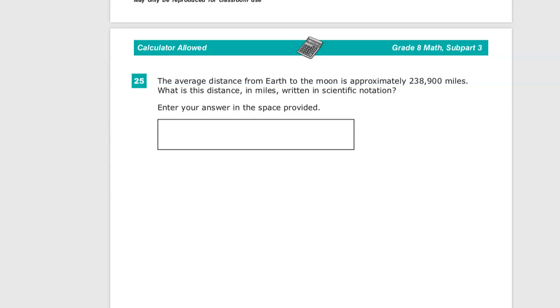This is the grade 8 math practice test for TNReady, question number 25. We're in the calculator allowed section, I don't think you'll need it here. The average distance from Earth to the moon is approximately 238,900 miles. What is the distance in miles written in scientific notation?